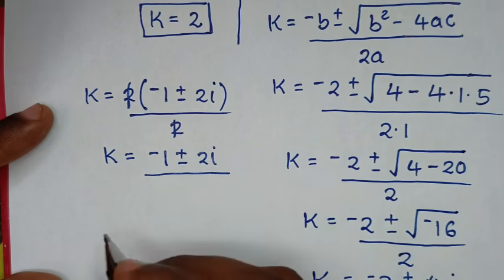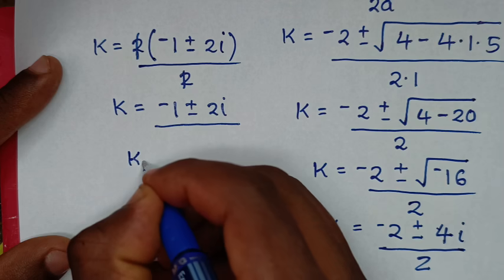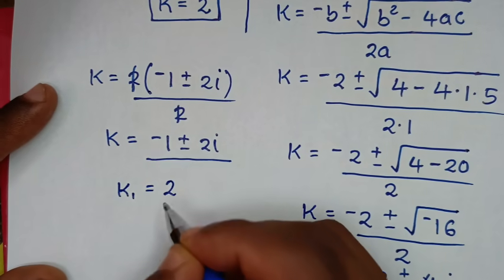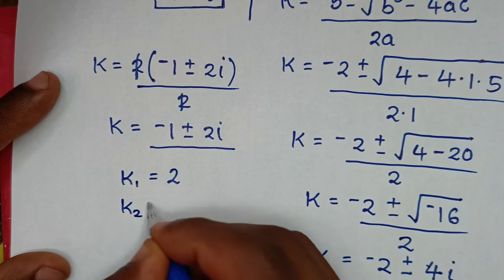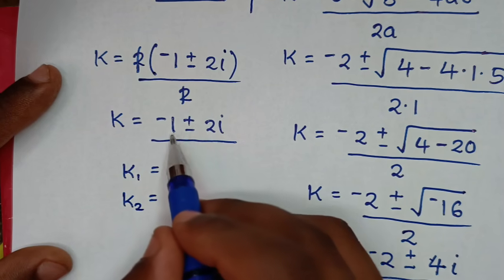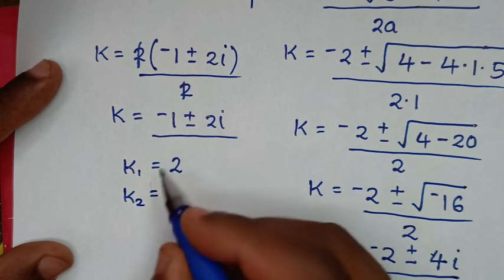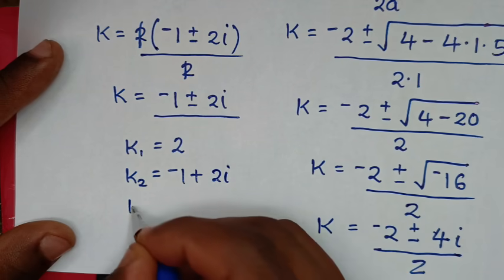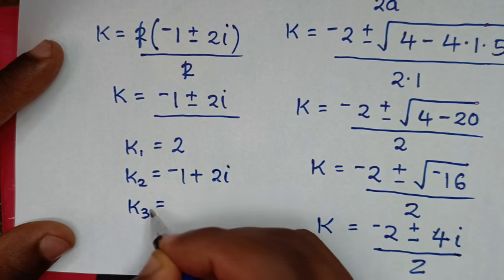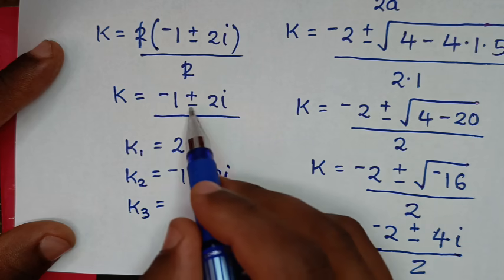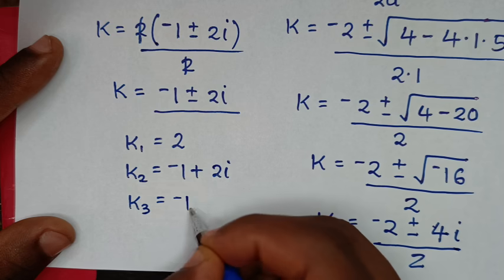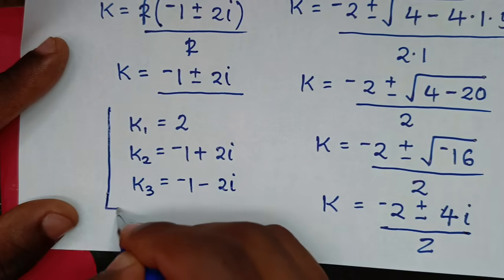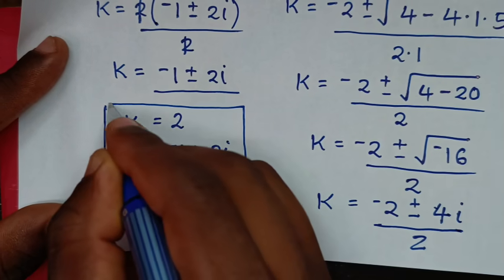In conclusion, the first value of k is equal to 2. The second value of k is negative 1 plus 2i. The third value of k is negative 1 minus 2i. These are all the values of k in this problem.